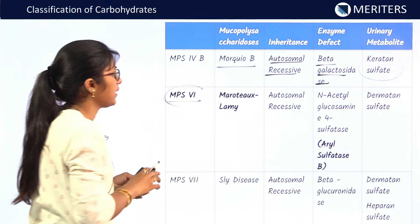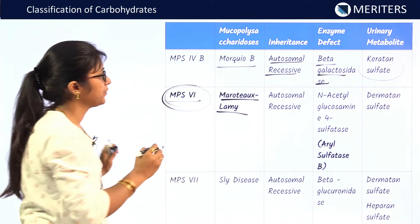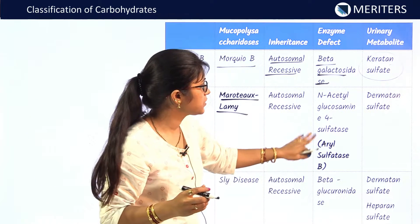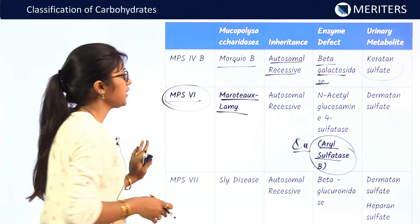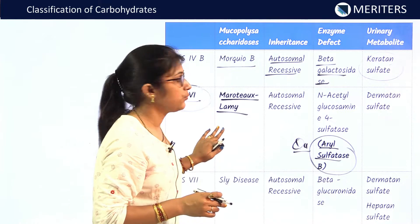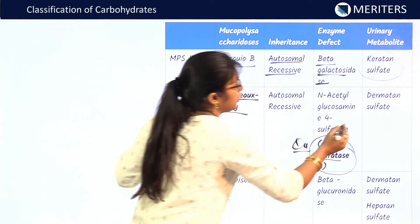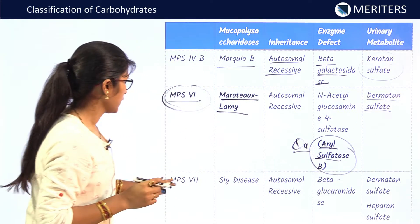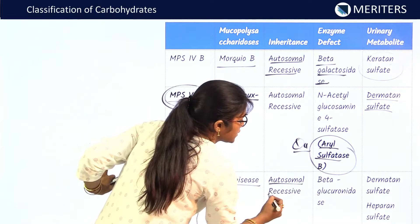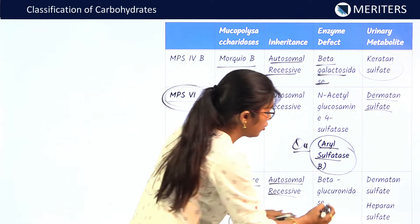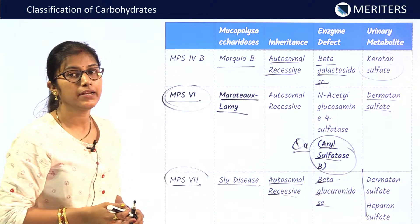MPS6 is Maroteaux-Lamy disease — autosomal recessive. The enzyme defect is arylsulfatase B. A likely exam question: arylsulfatase B is defective in which mucopolysaccharidosis? Answer: Maroteaux-Lamy or MPS6. The urinary metabolite is dermatan sulfate. MPS7 is Sly disease — autosomal recessive, enzyme defect is beta-glucuronidase, urinary metabolites are dermatan sulfate and heparan sulfate.